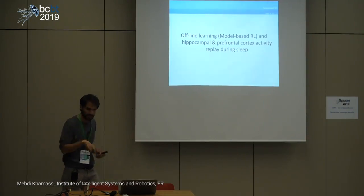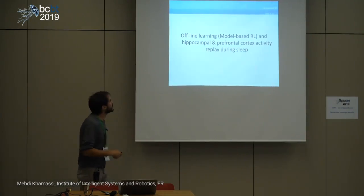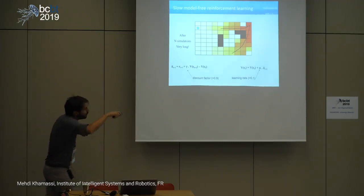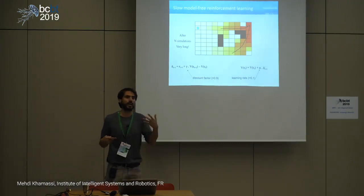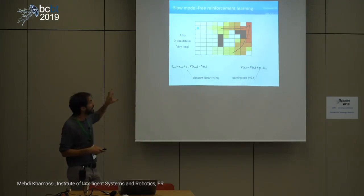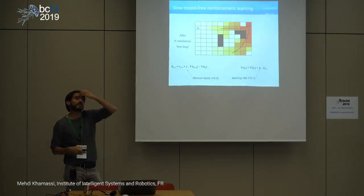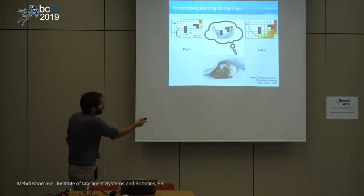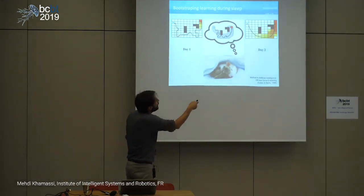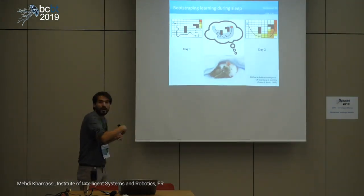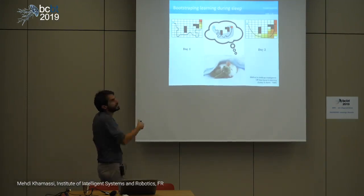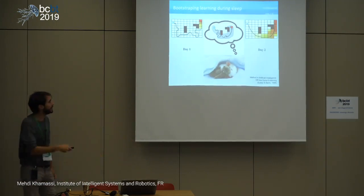Model-free reinforcement learning is super slow to learn, so people thought: how can we bootstrap this? If you have the agent use its internal model and simulate itself playing — for example during sleep — maybe when you put the agent back in experiments, it would perform better than if it had just used the value function learned at the end of day one.